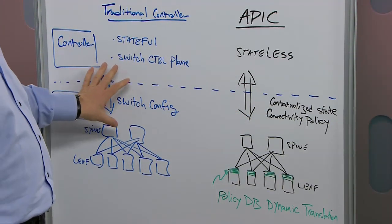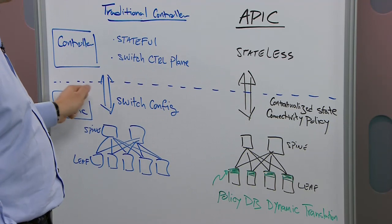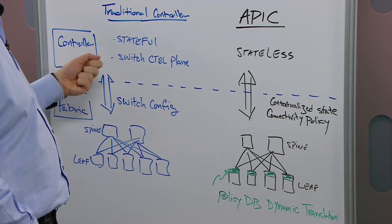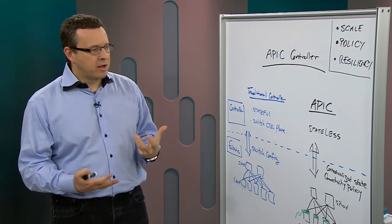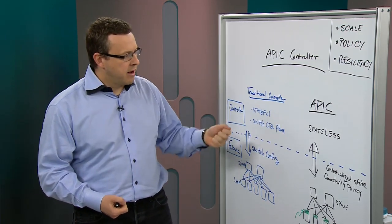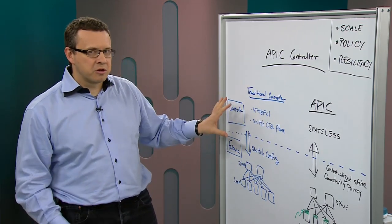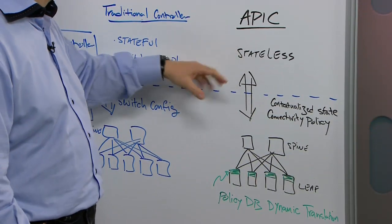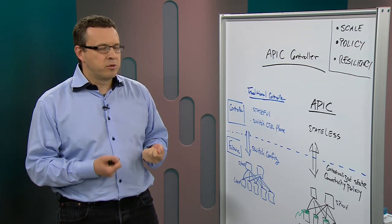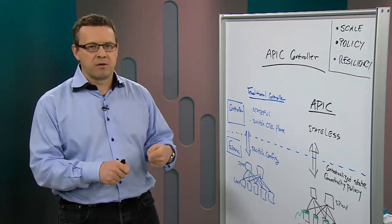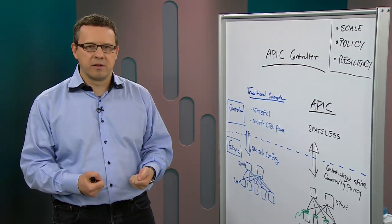Very hard to do on the traditional side because you have to have the contextualization done out of band at the controller or even one layer up. As you can see, multiple advantages of going from what I would call a traditional controller model to the APIC model, where we're talking about increasing the scale, using policies and pushing policies down into the fabric and translating them locally, and increasing resiliency by doing so.